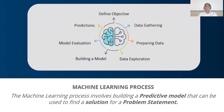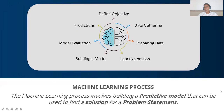There are seven stages of data processing: first, we define the objective; then data gathering, which means data collecting; then preparing data; then data exploration; then building a model using an algorithm; then model evaluation; and finally, prediction. These are the seven stages of data processing in machine learning.